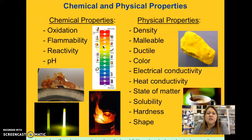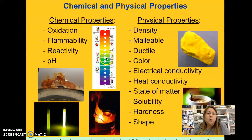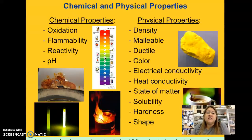And then pH. Here's an example of the pH scale. Many different substances fall in different places on the pH scale. Water is seven — it's neutral. If you've ever eaten something acidic like a lemon, it's going to taste really sour. So that's just an example of something you may be familiar with.